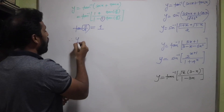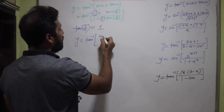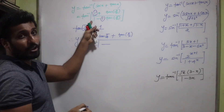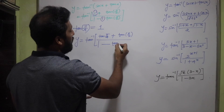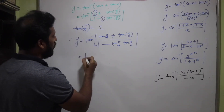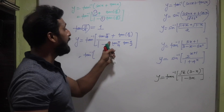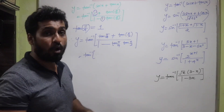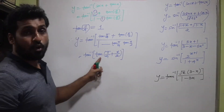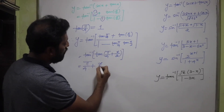Using the formula tan(A+B) = (tan A + tan B)/(1 − tan A·tan B), this becomes tan⁻¹(tan(π/4 + x/2)). Since tan⁻¹ and tan cancel, y = π/4 + x/2. Differentiating: dy/dx = 0 + (1/2)·1 = 1/2. That is the derivative of y = tan⁻¹(sec x + tan x).